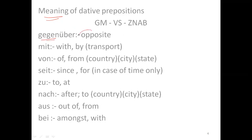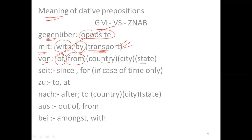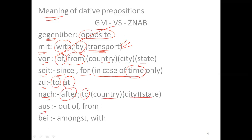Let's look at the meanings. Gegenüber means 'opposite.' Mit means 'with,' and also 'by' when traveling by transport — like I travel by car, by bus, by plane. Von gives two meanings: 'of' and 'from' in case of a country, city, or state. Seit means 'since' or 'for' but only in case of time. Zu means 'to' and 'at.' Nach means 'after' and 'to' for a country, city, or state. Aus means 'out of' and 'from.' Bei means 'amongst' or 'with.'